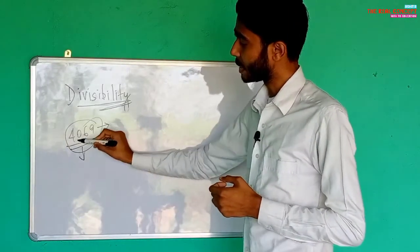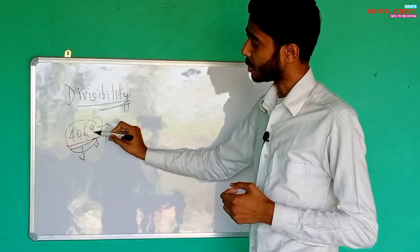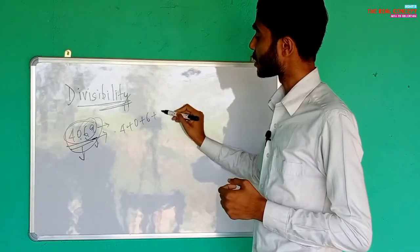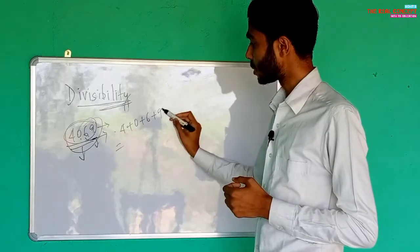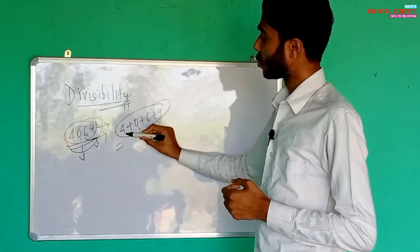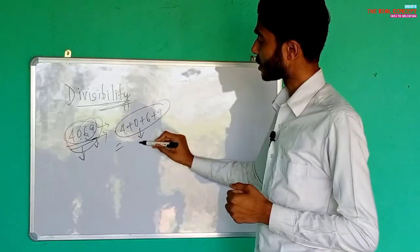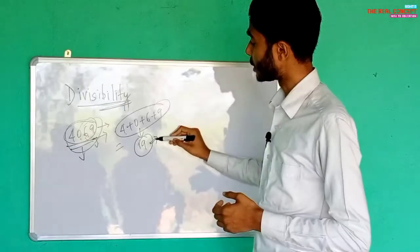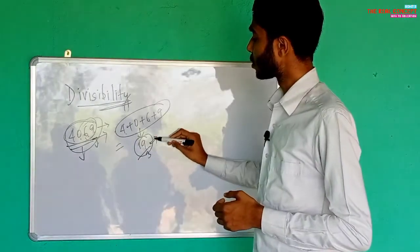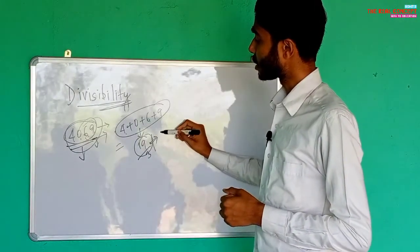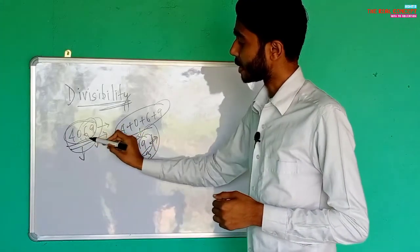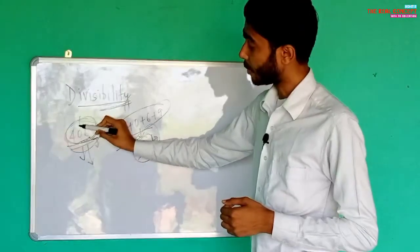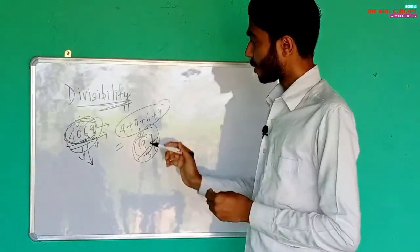For the number 4069, we find the total sum of the digits: four plus zero plus six plus nine. That gives us four plus six is ten, and ten plus nine is nineteen. The total sum is nineteen, which is not divisible by three. Therefore, the number 4069 is not divisible by three.